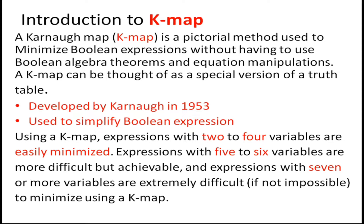A K-map can be thought of as a special version of a truth table. It was developed by Karna, the person who brought this pictorial method for minimizing Boolean expressions, in the year 1953. On his name we have this K-map or Karnaugh map method for simplifying Boolean expressions.